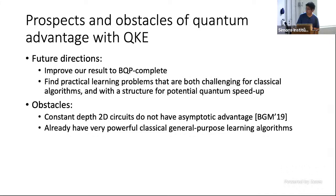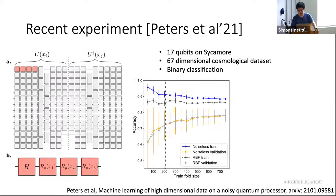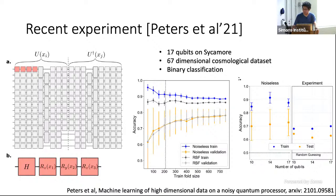Here is one example from recent experiments that implements this quantum kernel estimation algorithm. They used 17 qubits on Google's Sycamore device and tried to do binary classification of a cosmological dataset. The left-hand side shows the quantum feature map they used, which is essentially the same as what we just described, implemented by a shallow circuit. In simulations, the quantum kernel estimation algorithm achieves similar performance as classical SVMs. When actually implemented on a quantum computer, they observe a non-trivial accuracy of 60 to 70%, which is basically the state of the art for current experimental implementation of these algorithms.